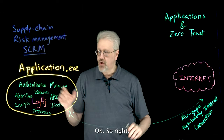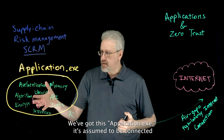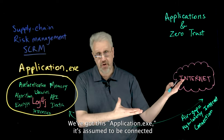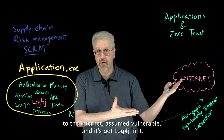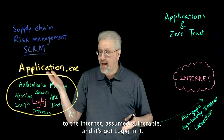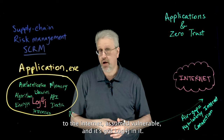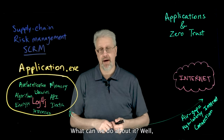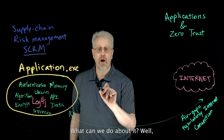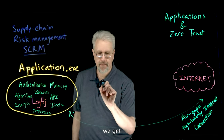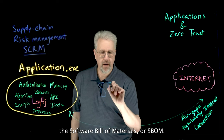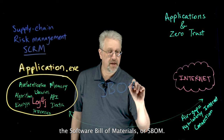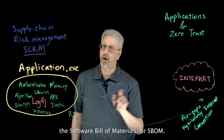So, we've got this application.exe. It's assumed to be connected to the internet, assumed vulnerable, and it's got log4j in it. How do we know? What can we do about it? Well, we get the software bill of materials, or SBOM.